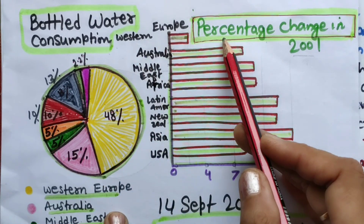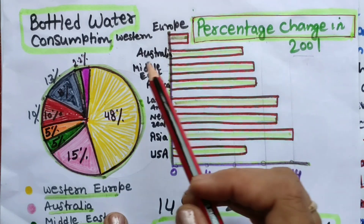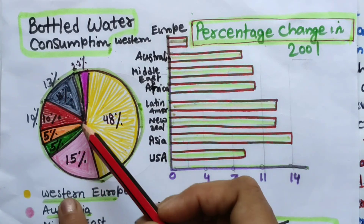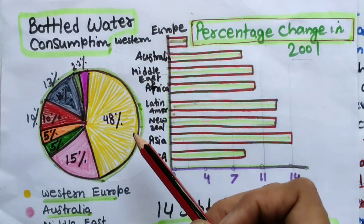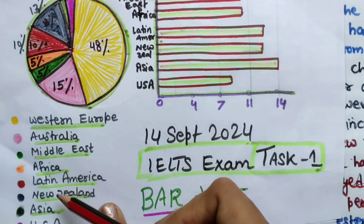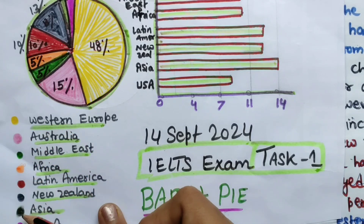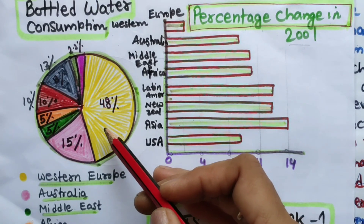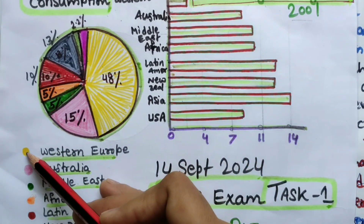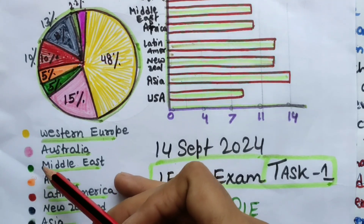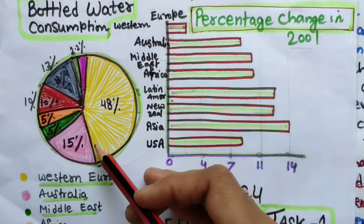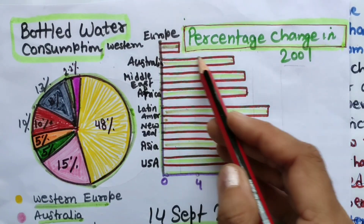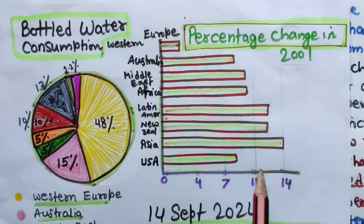Two titles have been given — the percentage change is from 2001. Here it is given: bottled water consumption. I can see the statistical data is given in percentages, and they have given the country names as well as a color scheme. But in the actual exam, it was black and white — light, then a little darker, then darker. For the pie chart, only one color was there — green. I have just made it fancy, but in the actual exam you will not get it like that.